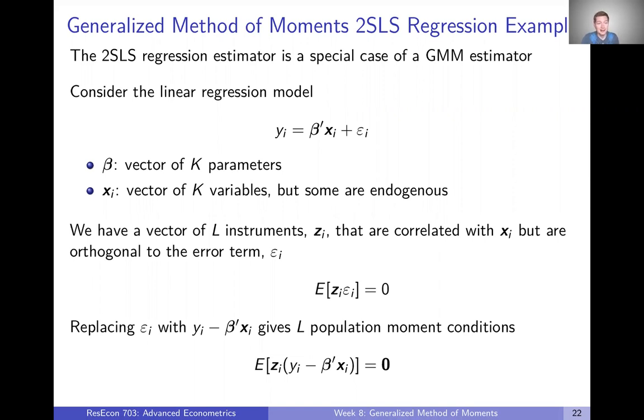So let's consider that same general linear regression model that we did a couple videos ago for OLS. We've just got our outcome Y. It's a linear function of beta and X, plus an idiosyncratic error term, epsilon. But now we're going to assume that some of those Xs are endogenous. So if we were to proceed with OLS estimation, or even the GMM version of OLS that we talked through a couple videos ago, our betas here would be biased and inconsistent if we wanted to give them a causal interpretation.